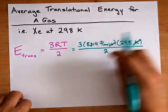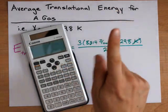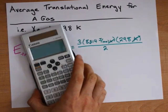The Kelvins will cancel out and you will be left with an answer in joules per mole because it is the number of joules of translational energy for one mole of that atom or molecule.